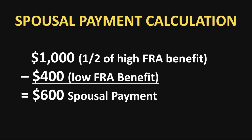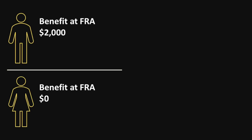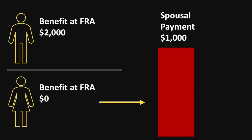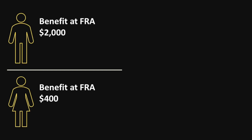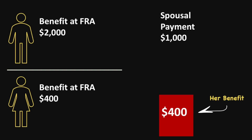Let's walk through an example to make sure you understand this. Let's again assume the higher earner has a primary insurance amount of $2,000. In this case, we'll assume that the spouse does not have a benefit of their own, so the spousal payment would still be $1,000, or half of the higher earner's primary insurance amount. Now let's look at a case where the benefit is split: the higher earning spouse has a benefit of $2,000, and the lower earning spouse has their own benefit of $400. They are still eligible for a total spousal payment of $1,000, but it would be paid as follows: the lower earning spouse would receive $400 from their own record, and then a spousal payment of $600.